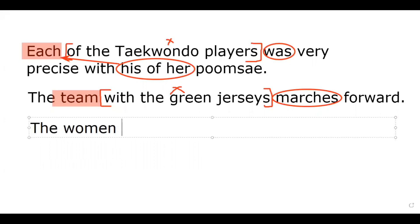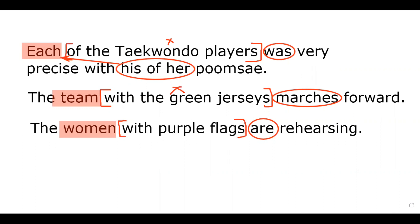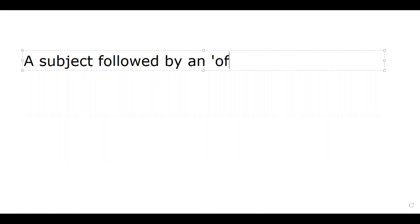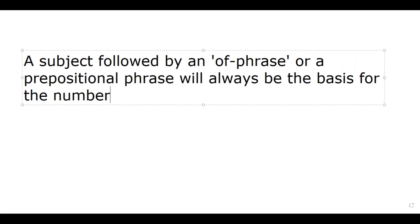In the third sentence, 'The women with purple flags are rehearsing.' Women is already plural, so it requires a plural verb — 'are.' In this rule, always remember that a subject followed by an of-phrase or a prepositional phrase will always be the basis for the number of the verb in the sentence.